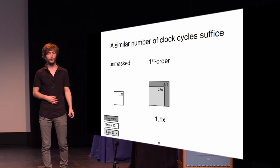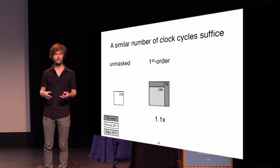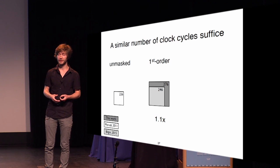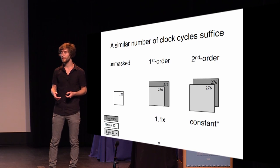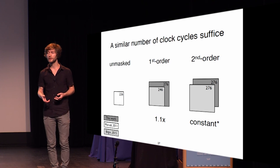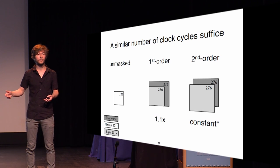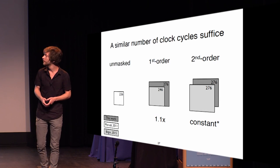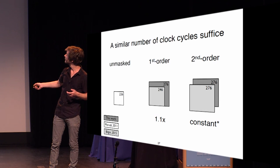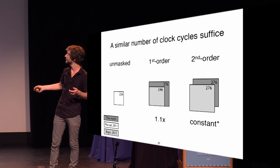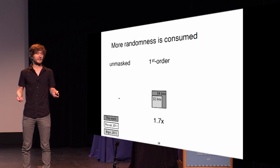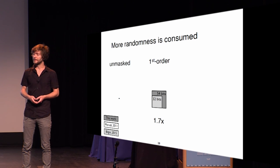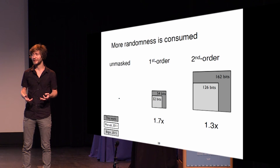When we look at clock cycles, there is only a very small increase to achieve our security — about 10% going to first order, and for second order it stays constant. A small disclaimer: the previous second-order implementation could have been made with the same number of clock cycles as our first-order implementation. The drawback of our work is that more randomness is consumed: a 70% increase in randomness for first order, and 30% for second order — something that will be interesting to investigate.